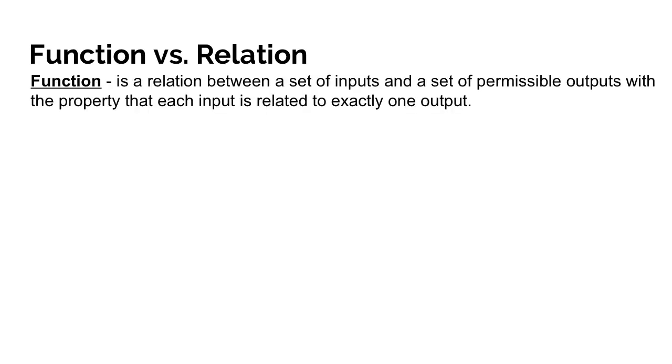A function is a relation between a set of inputs and a set of permissible outputs with the property that each input is related to exactly one output. Or more simply stated, for every one input, there is one and only one output.